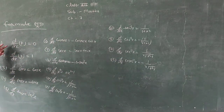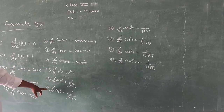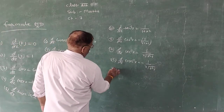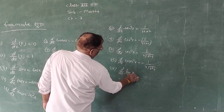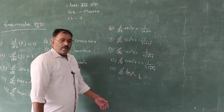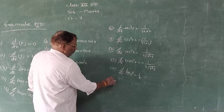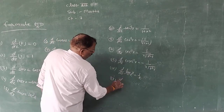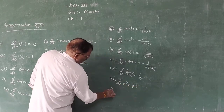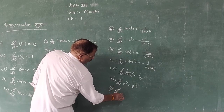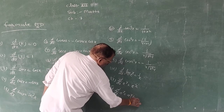So we have covered: algebraic, trigonometric functions done, inverse trigonometric functions done. Formula 16: Differentiation of log x (base e) = 1 upon x. Formula 17: Differentiation of e to the power x = e to the power x. Formula 18: Differentiation of a to the power x = a to the power x · log a.